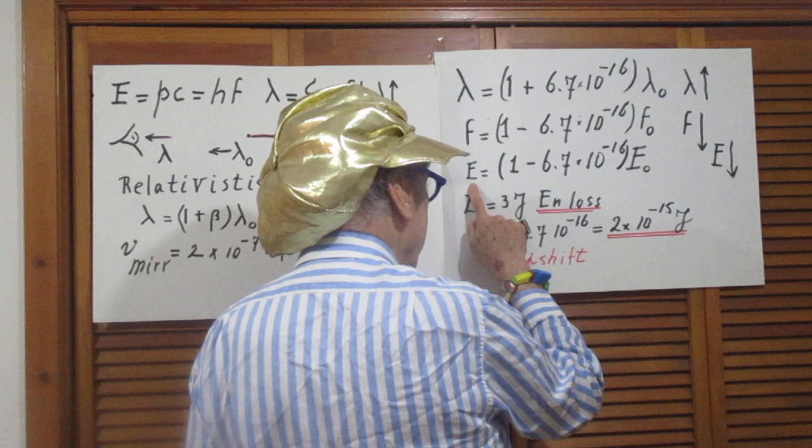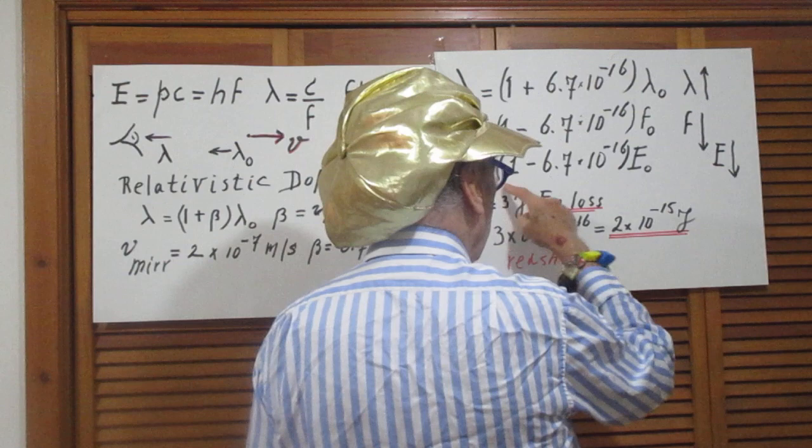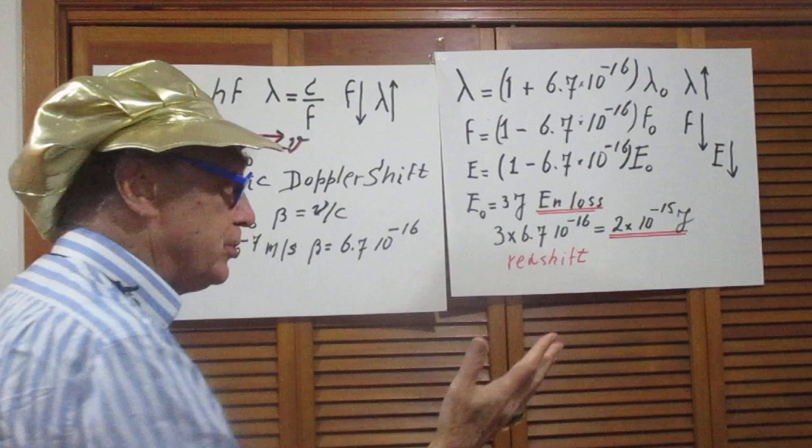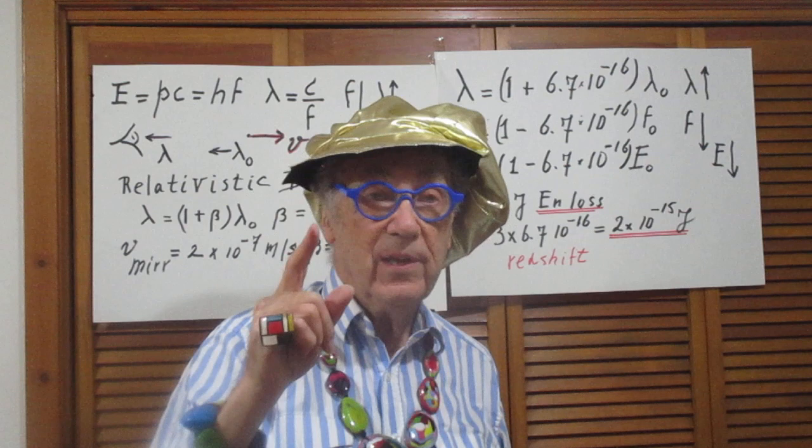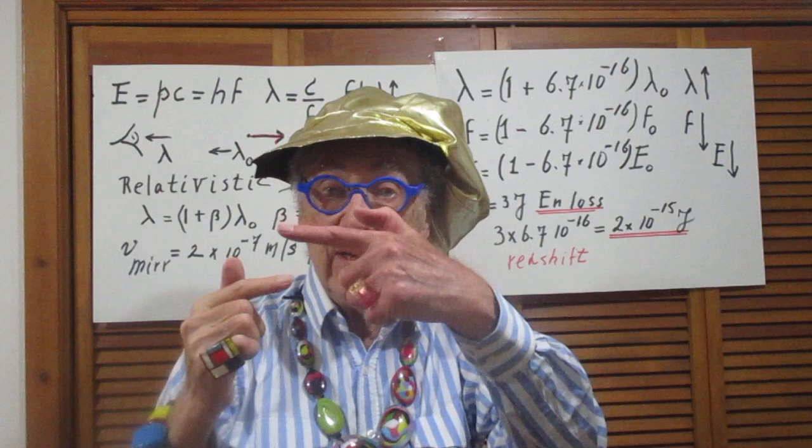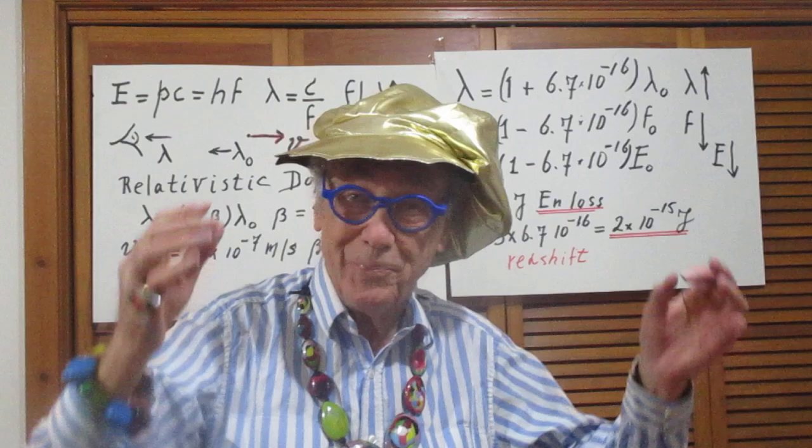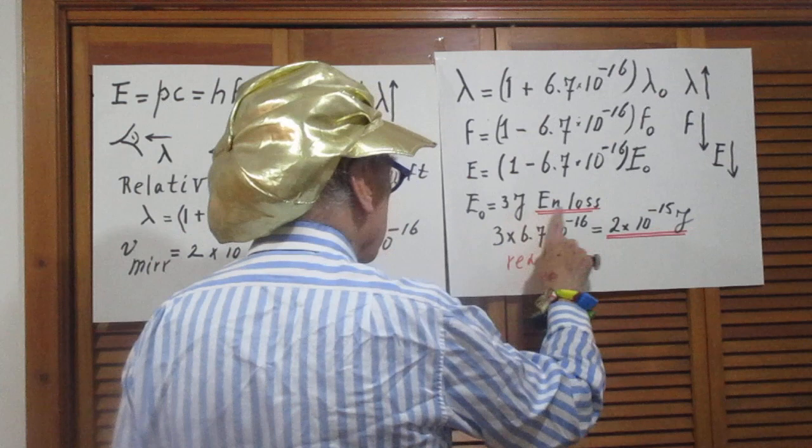So the energy that I will receive from light reflected off the moving mirror is 1 minus this times E zero. Since E zero was 3 joules, remember we calculated that the energy in the radiation that comes in is 3 joules, and what comes back very close to 3 joules but just a hair less.